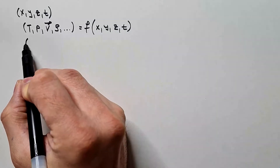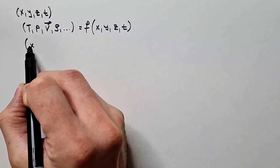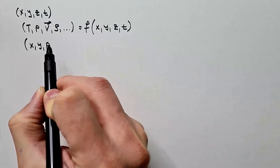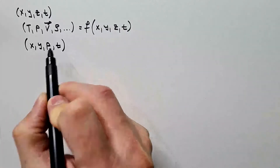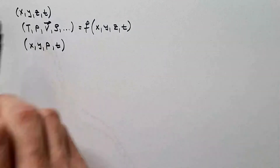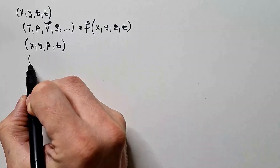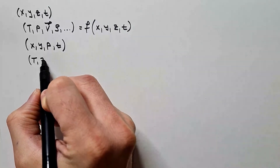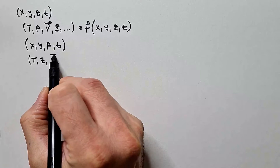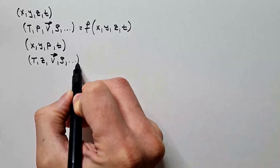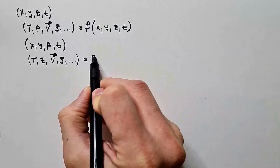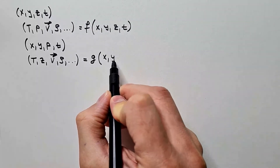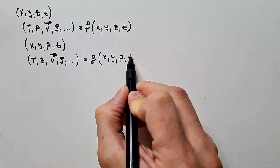And then in that case, we would say that x, y, p and t are independent variables instead of z. And therefore we would say that temperature, now instead of height, wind vector, density and so on, are some function, let's say g, of x, y, p and t.